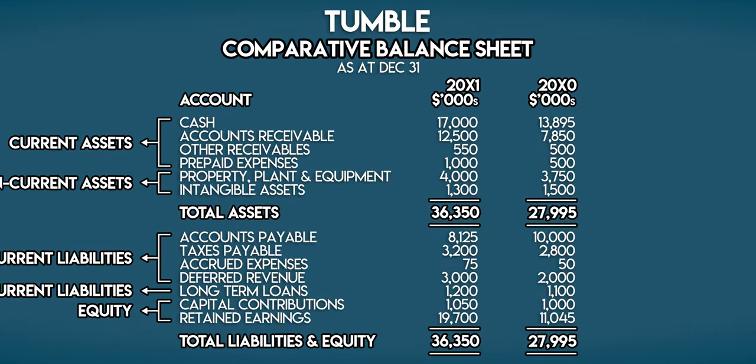Cash flow from financing activities: financing activities involve raising or repaying cash or capital used to fund a business. Tumble raised $100,000 in long-term debt — a liability to a third-party bank — and made no debt repayments this year. They issued $50,000 in common stock, which is a capital contribution from shareholders that increases equity, and they paid $1 million out in dividends back to those shareholders, which decreased their equity. So that's a net cash outflow from financing activities of $850,000.